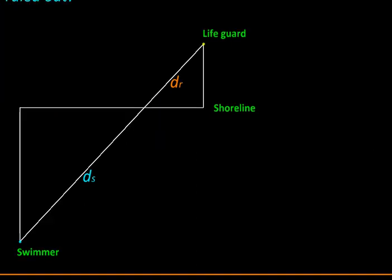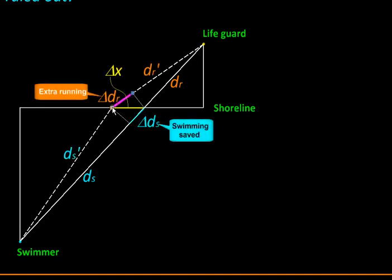So how does that happen? To understand that, let us consider this deviated path. Here is the increase in running distance, delta dr, and reduction in swimming distance, delta ds. And that happened because we shifted to the left by this distance, delta x.